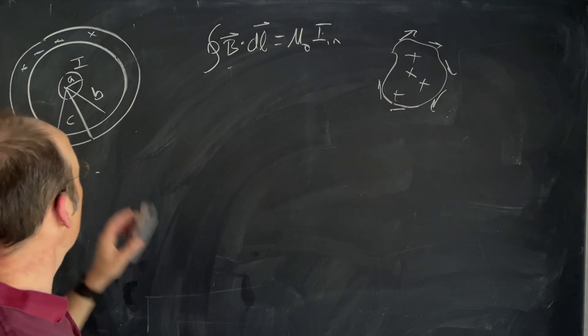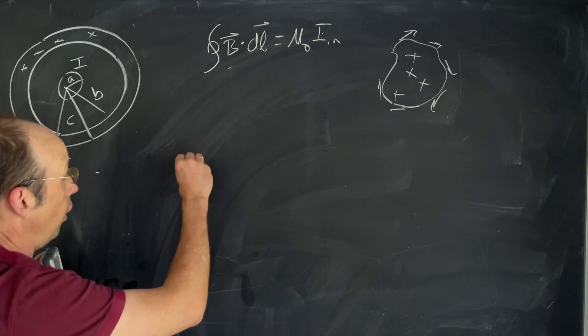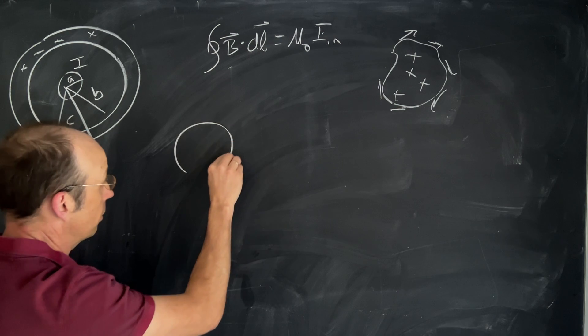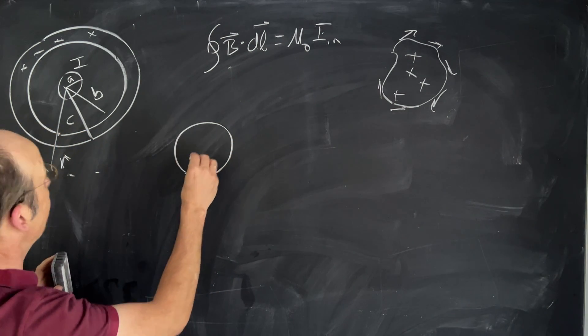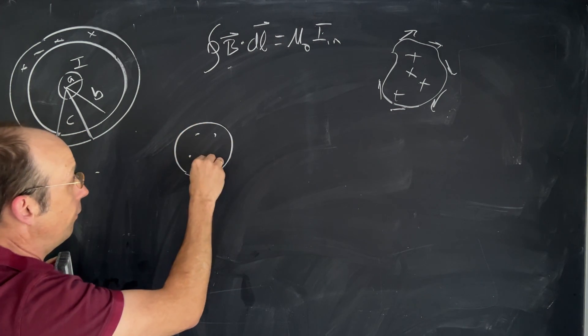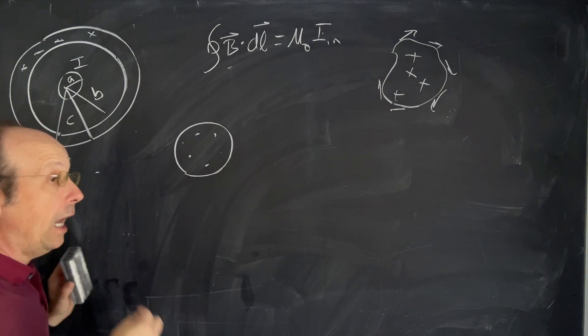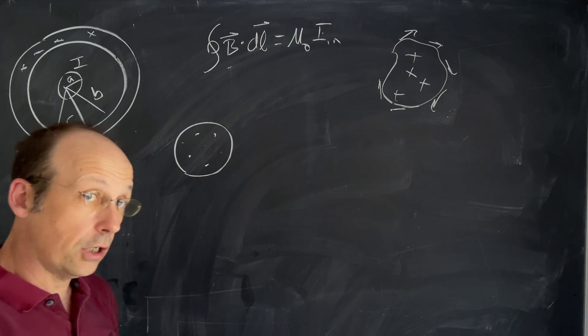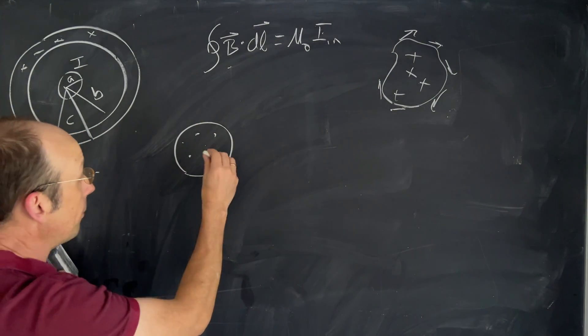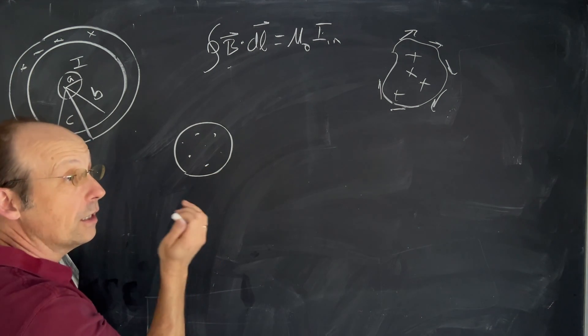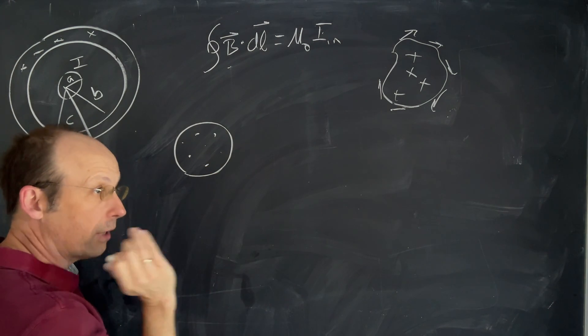So let's just start with this inner wire. I'm gonna draw it bigger. Here I have the current coming out of the page.